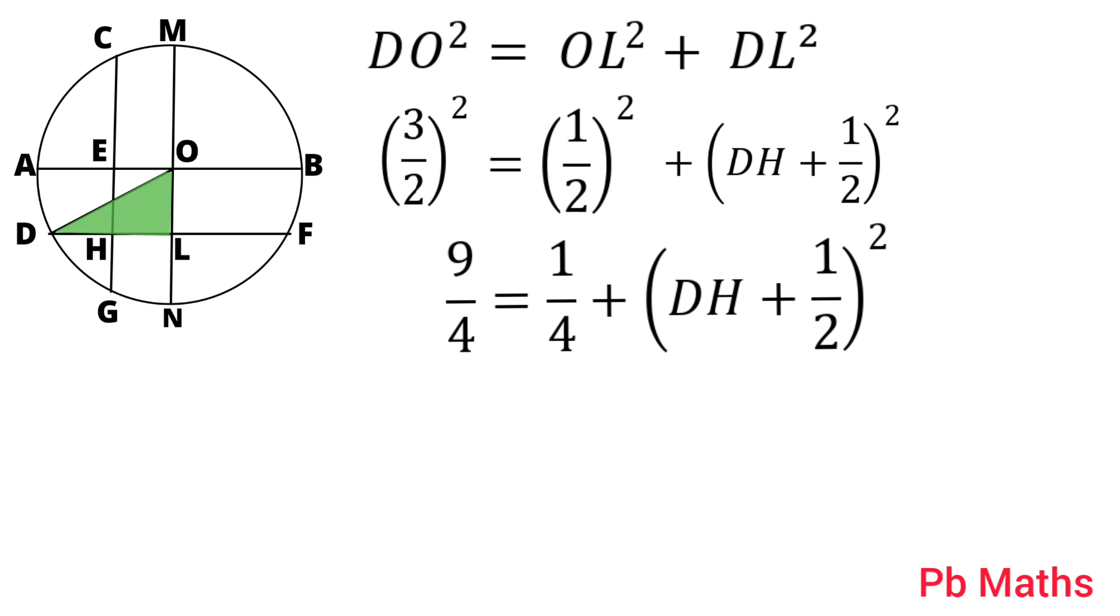Then, (DH + 1/2)² equals 9/4 minus 1/4, which equals 8/4. So, (DH + 1/2)² equals 2.